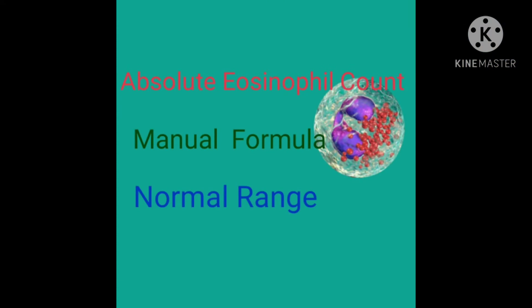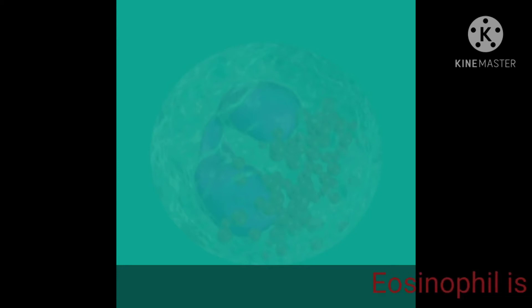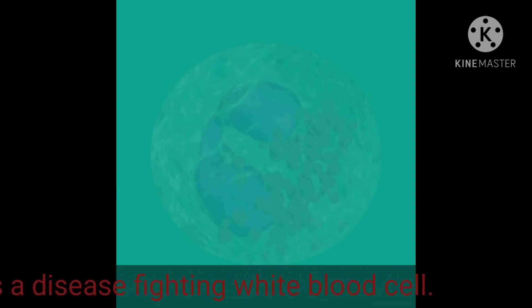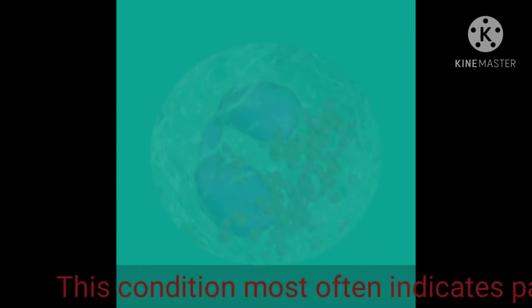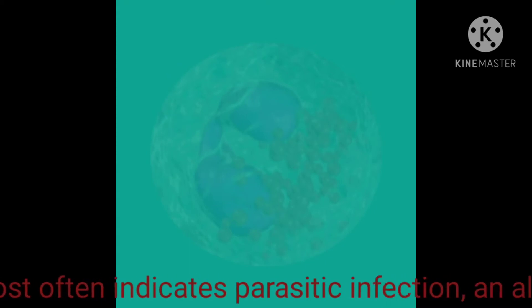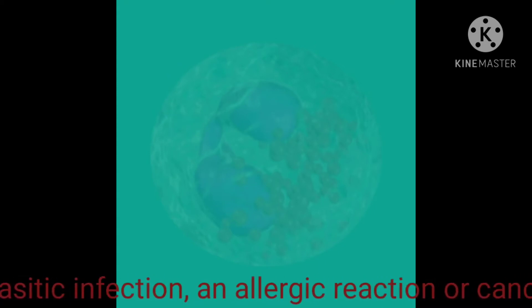Hi everybody, welcome back. First we have to know what is eosinophil and how it looks. Eosinophil is a disease-fighting white blood cell. This condition most often indicates parasitic infection, an allergic reaction, or cancer.